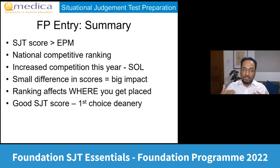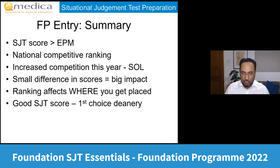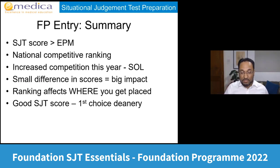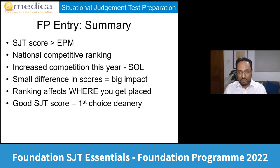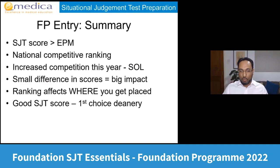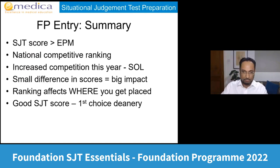There will be increased competition this year, as last year was the first year all doctor jobs were on the shortage occupation list, allowing international graduates to apply on equal standing with UK graduates based on scores alone. Because that was the first year, many doctors perhaps didn't know about it — this year, more people know about eligibility applications, so I expect slightly more competition. A small difference in scores — less than half an SJT point — could be one question in the SJT and have a big impact on where you end up. Your ranking determines where you get placed for foundation. If we can help you get the best SJT score possible, the goal is to get you your first choice deanery.